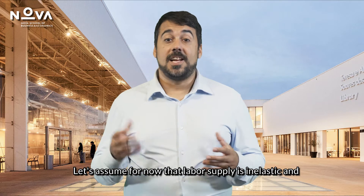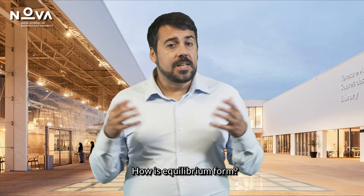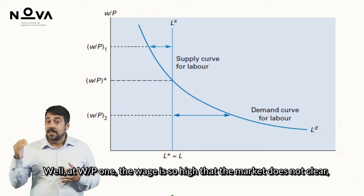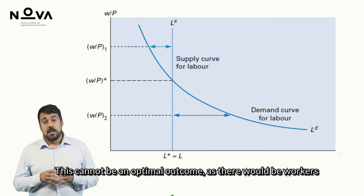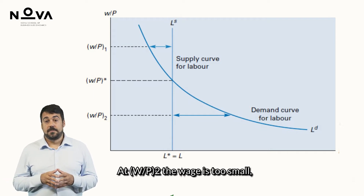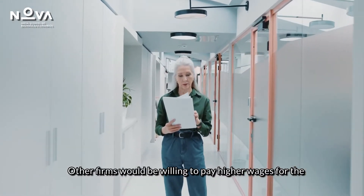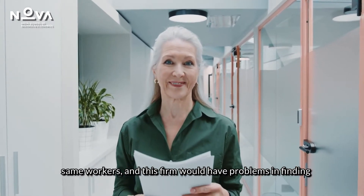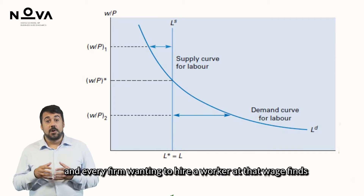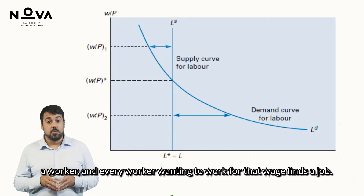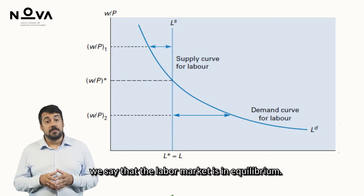Let's assume for now that labor supply is inelastic, and workers supply LS units of labor irrespectively of the wage — we will relax this assumption later. At W/P1, the wage is so high that the market does not clear, as firms' demand for labor is smaller than labor supply. At W/P2, the wage is too small, as firms would want to hire more people than they can find; other firms would be willing to pay higher wages. At W/P*, supply equals demand, every firm finds a worker and every worker finds a job. We say the labor market clears and is in equilibrium.